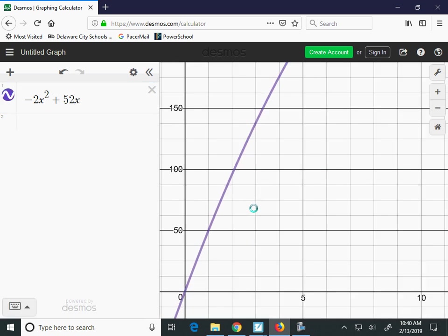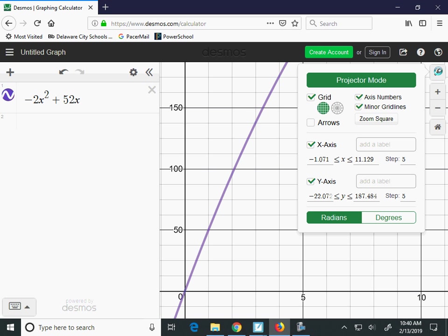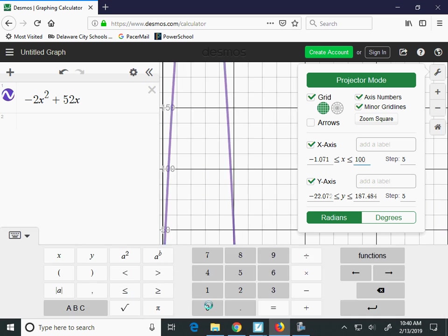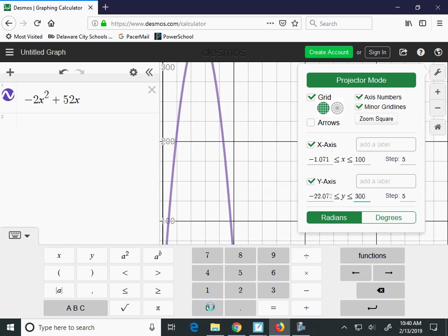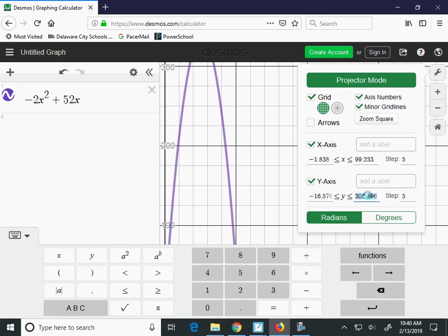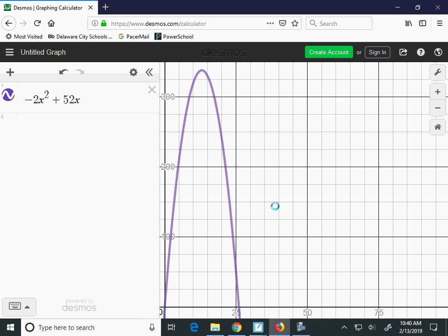Alright, so I can't see the maximum. I need to adjust my window. I can't see the x's, so I'm going to maybe make the x max out to 100. Yep, and that'll work for me. And my y max needs to be higher, so maybe I'll make it 300. And not quite there, just a little bit higher, so maybe 350, which allows me to see the maximum.